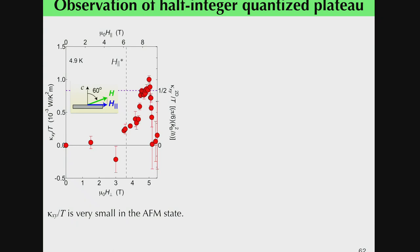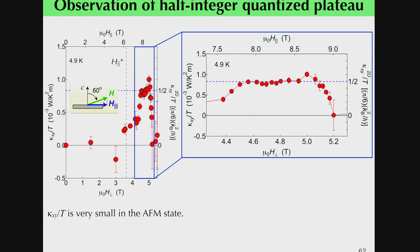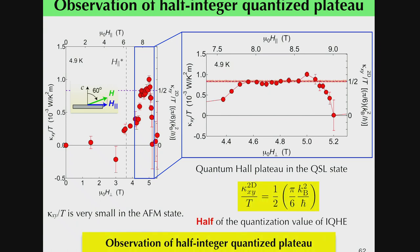As you can see, thermal Hall conductance is almost zero in the antiferromagnetic ordered state. But κ_xy is dramatically enhanced above the critical field. Remarkably, the thermal Hall conductance shows a plateau as a function of magnetic field, demonstrating a quantum plateau. More surprisingly, this plateau value is exactly half the quantization value expected in the integer quantum Hall effect, demonstrating the half-integer quantized thermal Hall conductance.